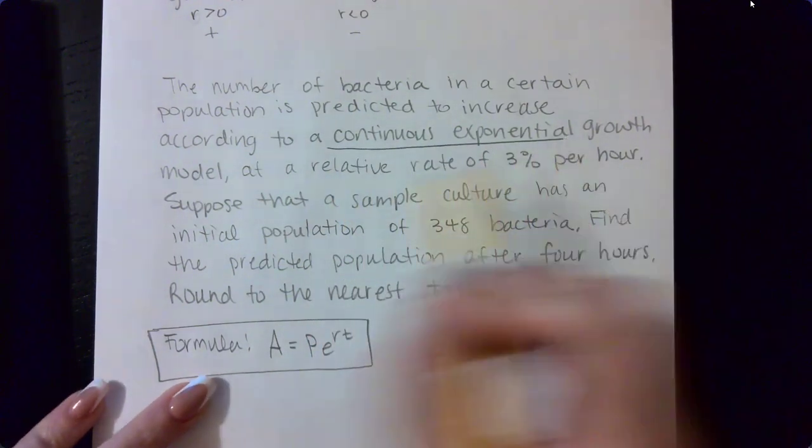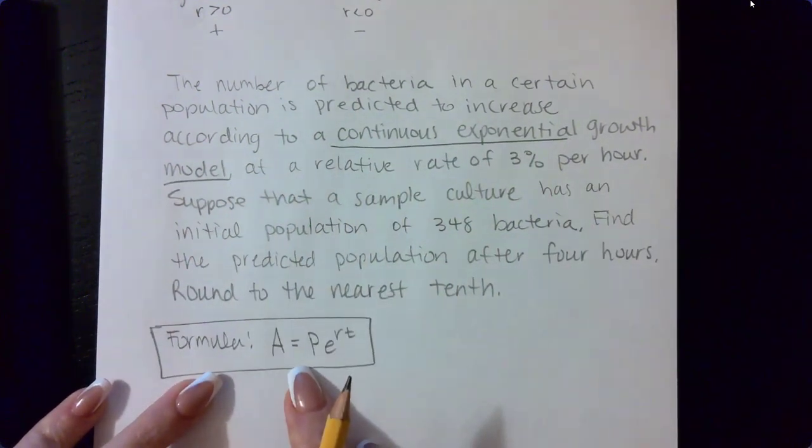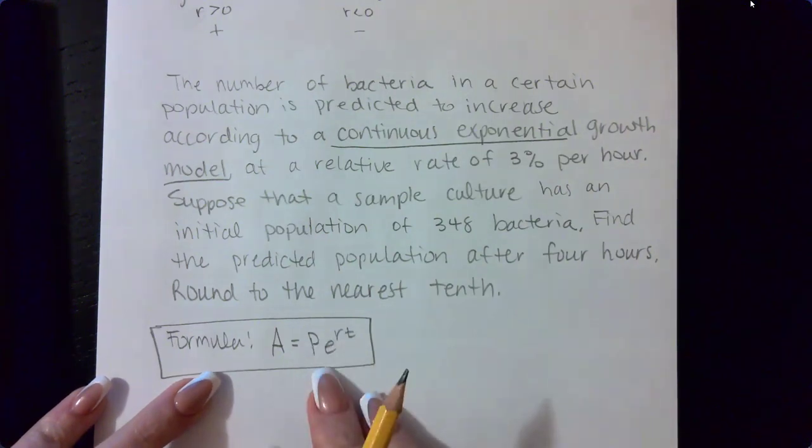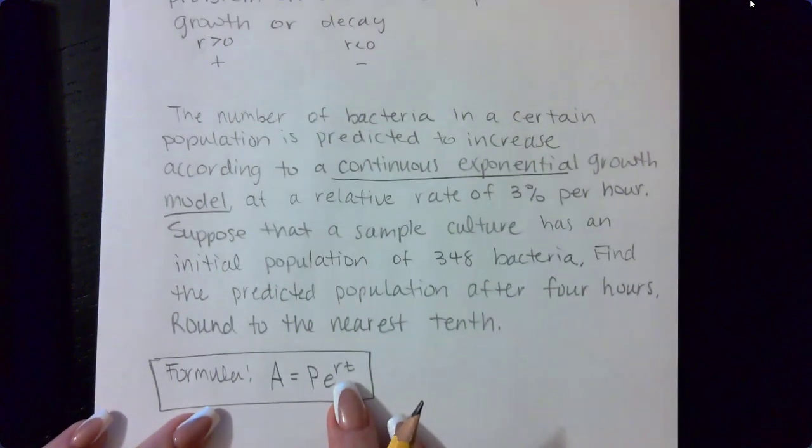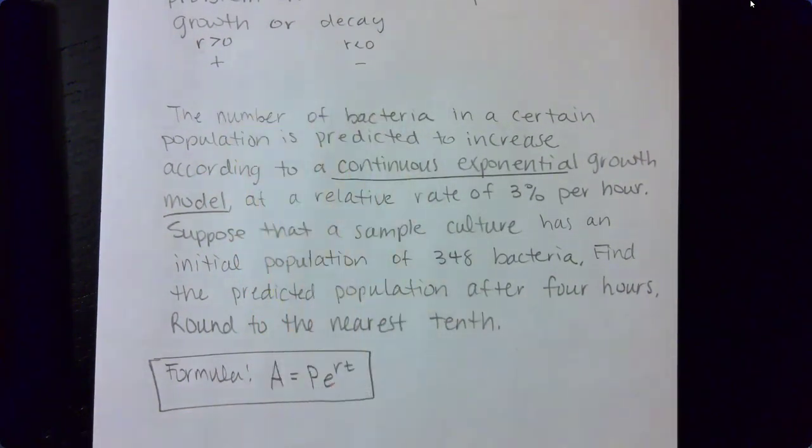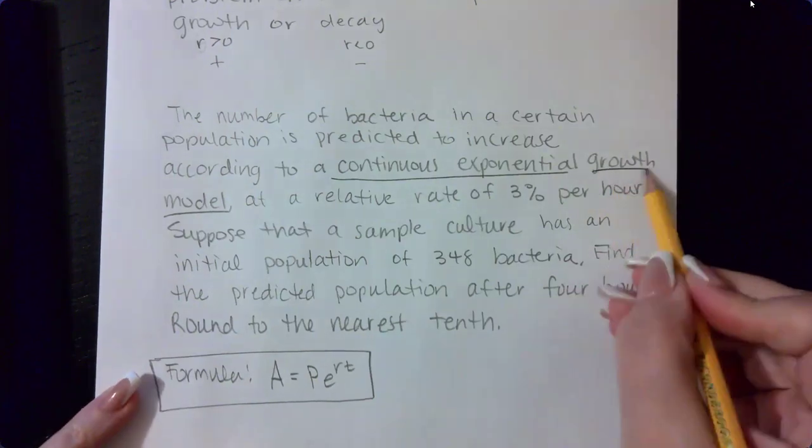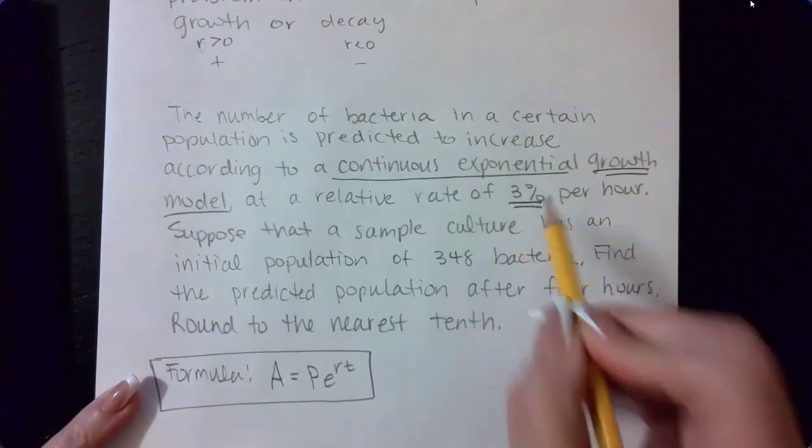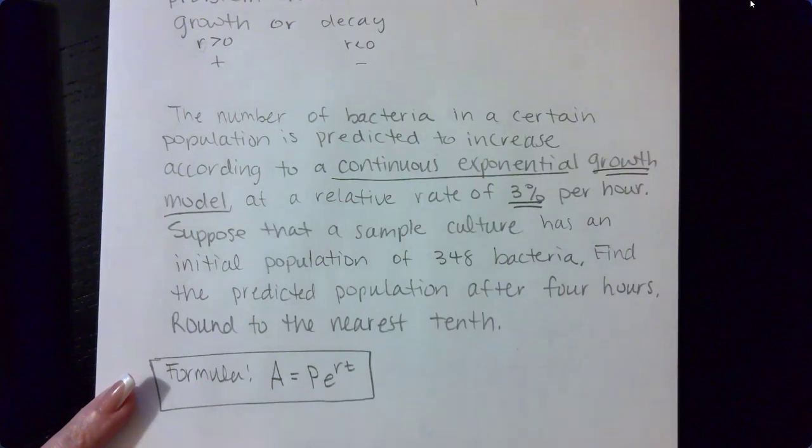If it is a continuous exponential model, then that means we are going to be using this particular formula for exponential growth or decay. Remember, the growth and decay part indicates what the sign of the R value, the rate. Since ours is a growth problem, it means that this 3% is going to be a positive 3%.